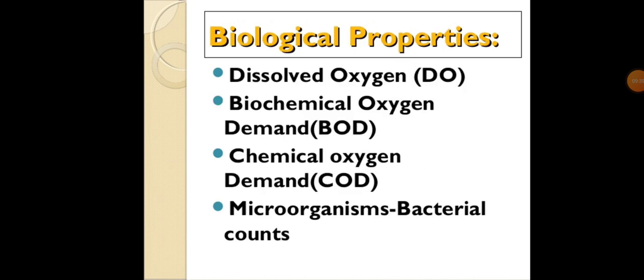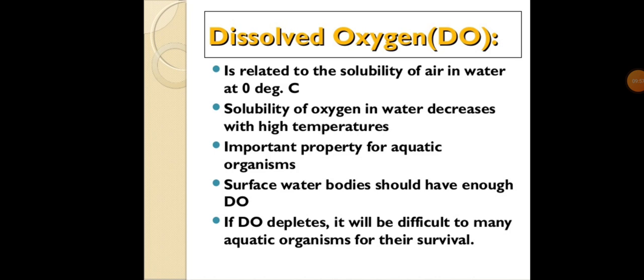Then biological properties of water: firstly dissolved oxygen (DO), then biochemical oxygen demand (BOD), then chemical oxygen demand (COD), and microorganisms and bacterial counts. Dissolved oxygen (DO) is related to the solubility of air in water at 0 degrees Celsius. Solubility of oxygen in water decreases with high temperatures. It is an important property for aquatic organisms — surface water bodies should have enough DO. If DO depletes, it will be difficult for many aquatic organisms to survive.